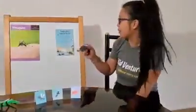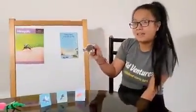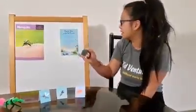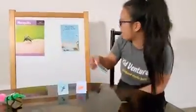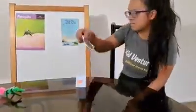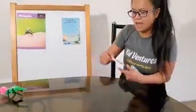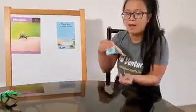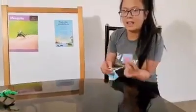Are you ready? There was a little turtle. He lived in a box. He swam in the water and he climbed on the rocks. He snapped at a mosquito. He snapped at a flea. He snapped at a minnow and he snapped at me. He caught the mosquito. He caught the flea. He caught the minnow, but he didn't catch me.